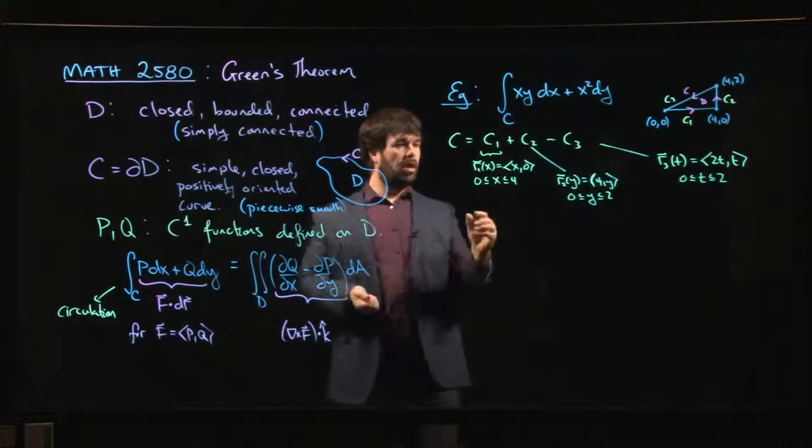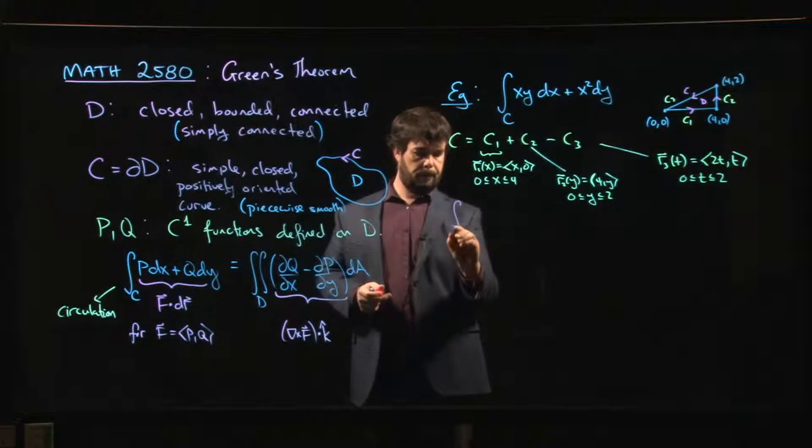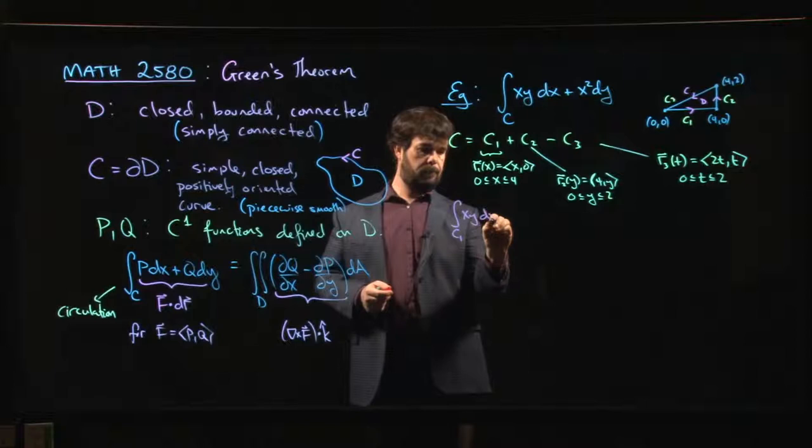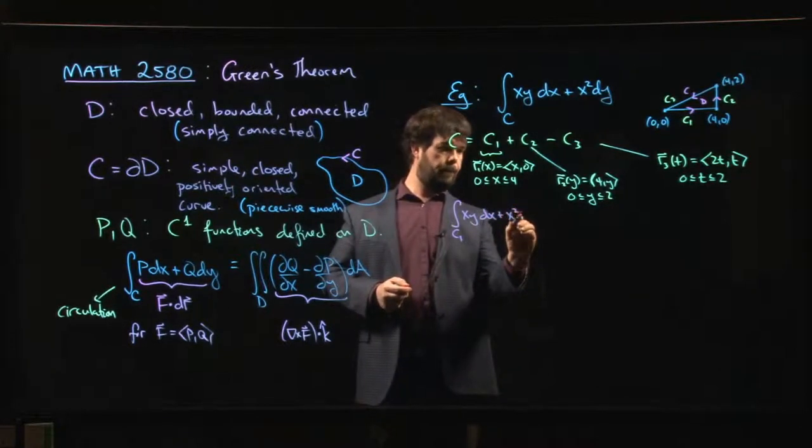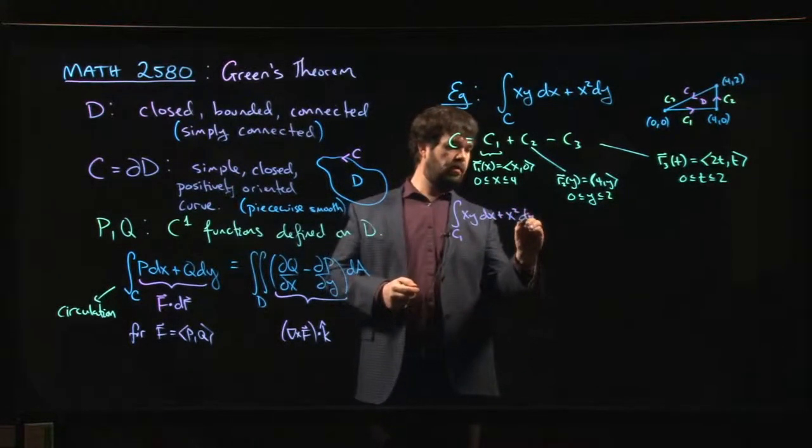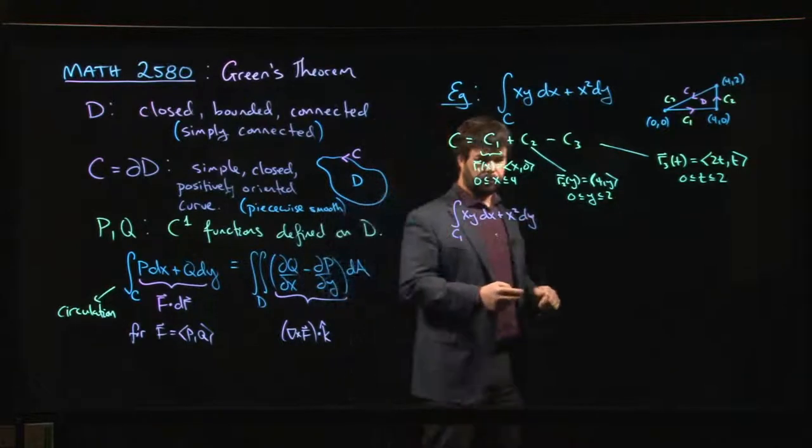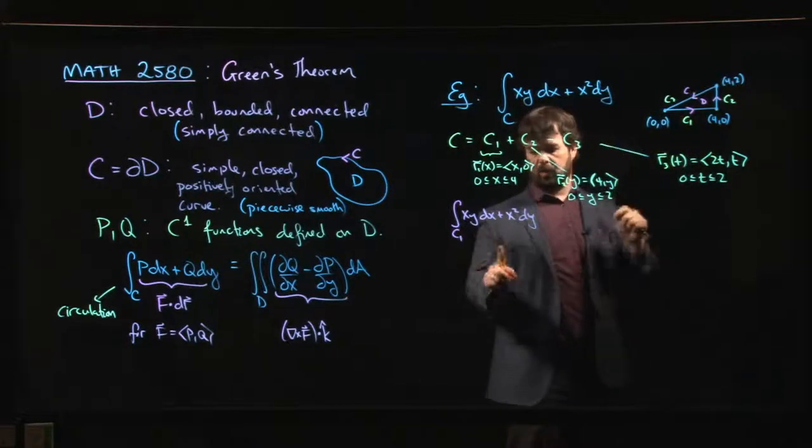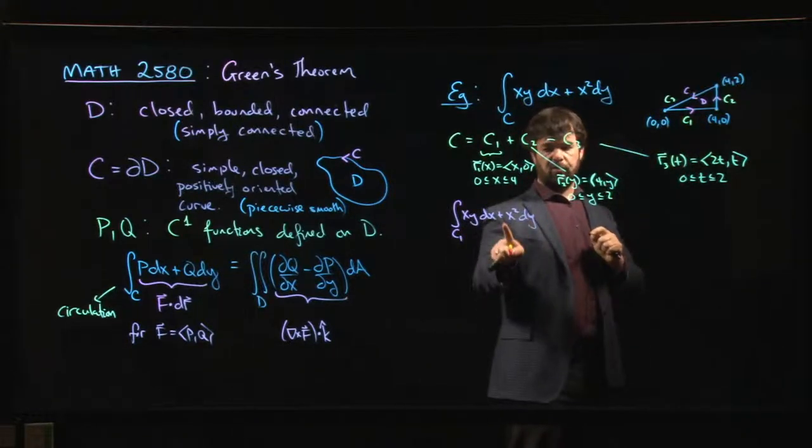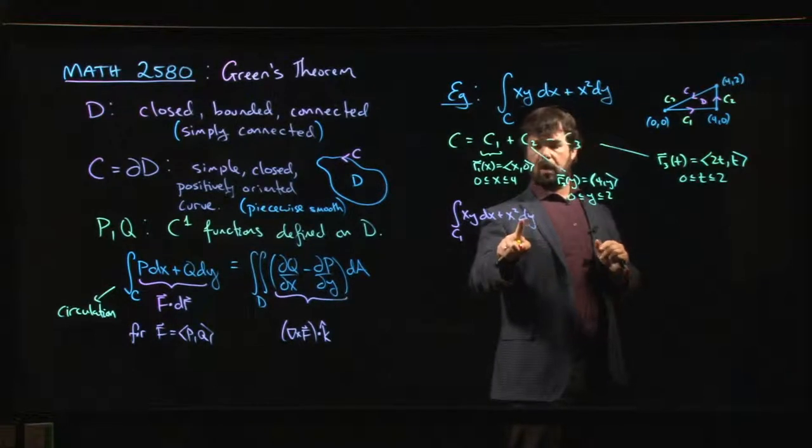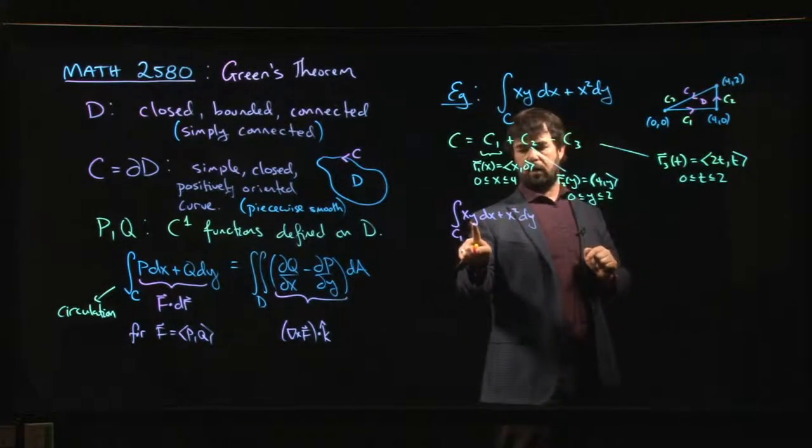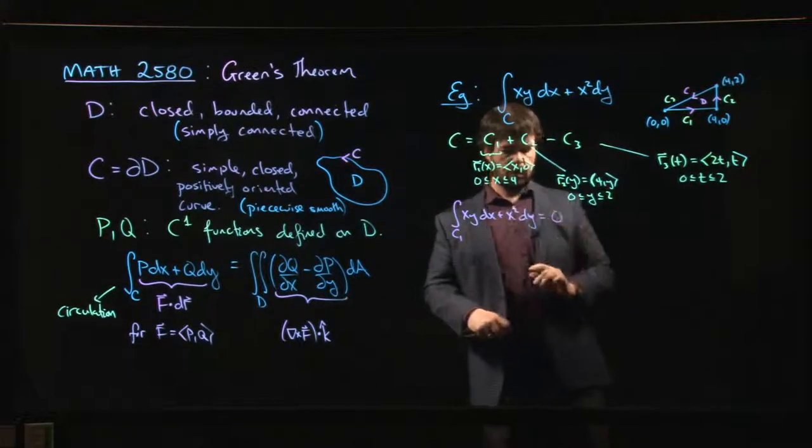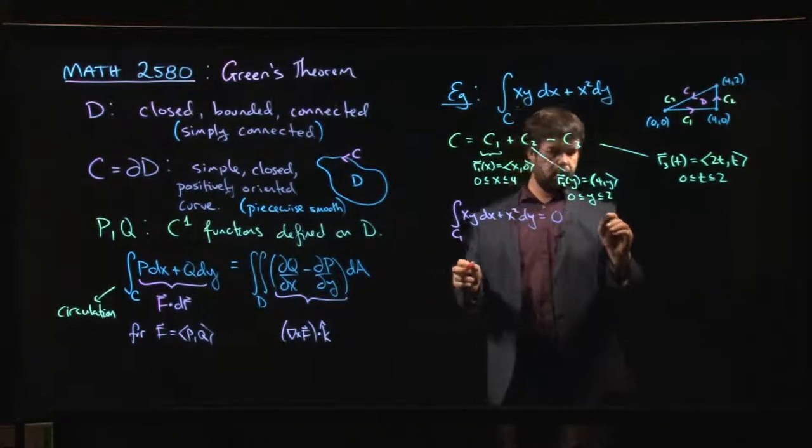Let's see what we get if we do it. Okay, so along c1, well actually, we don't have to do anything here. Because along c1, along the bottom of the triangle, y is held constant, which means that dy is 0, which means we don't have to look at this term. But also y is held at the constant value of 0. So this term is 0. So we actually know that that whole integral is 0. We don't have to worry about it.